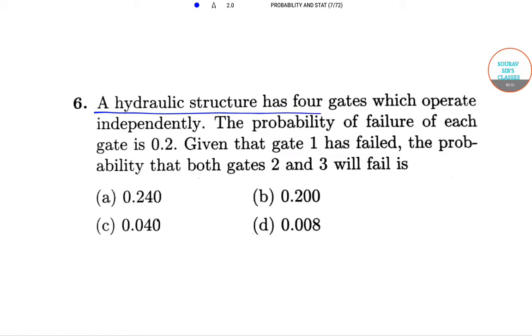A hydraulic structure has 4 gates which operate independently. The probability of failure of each gate is 0.2.